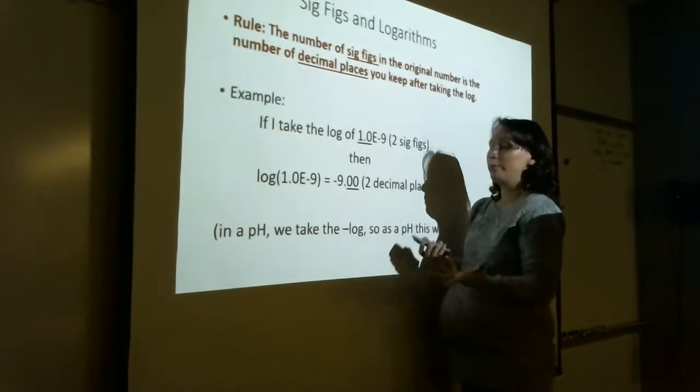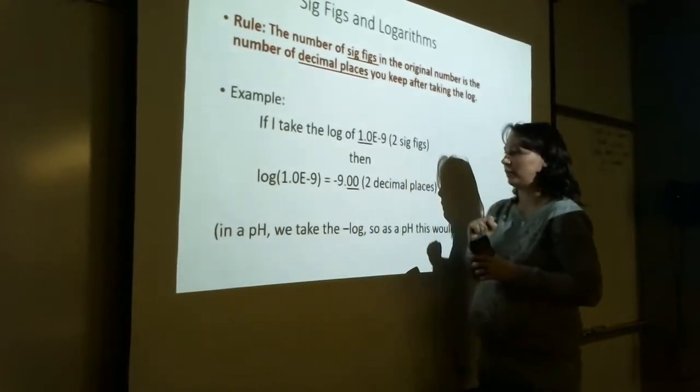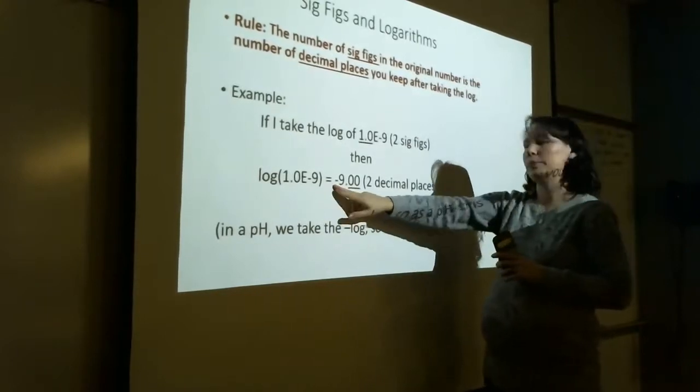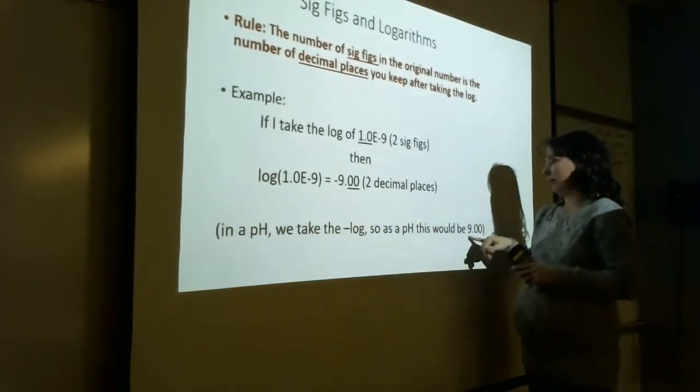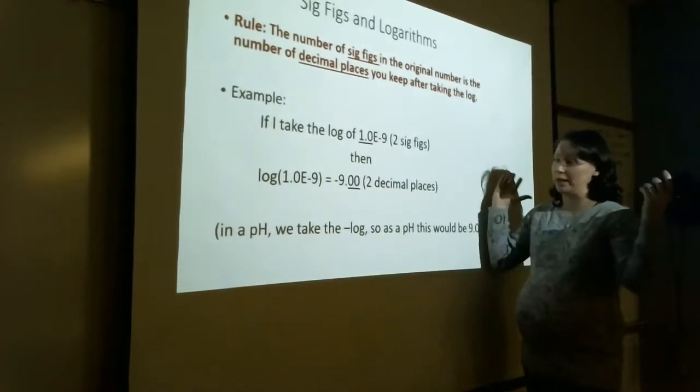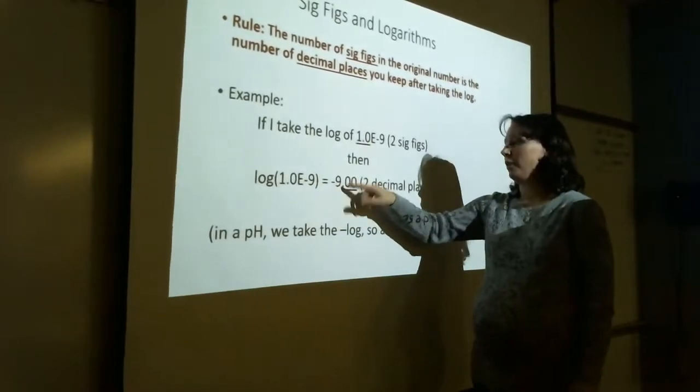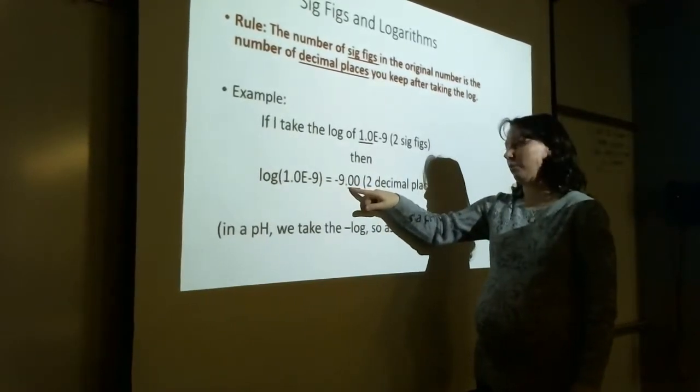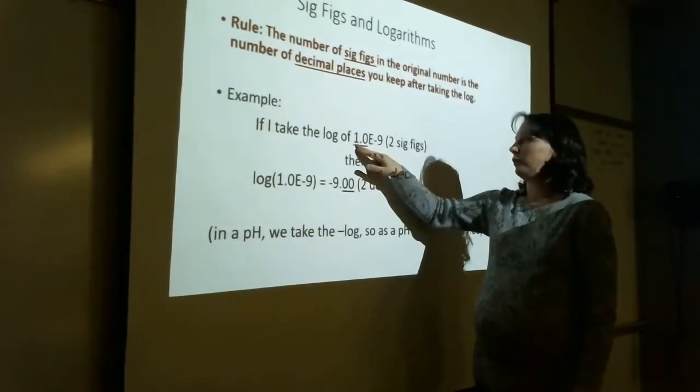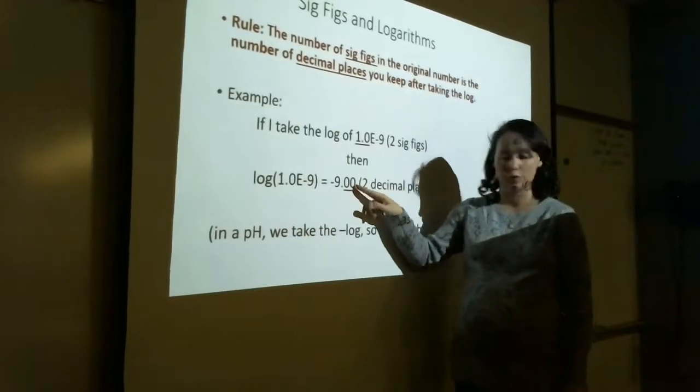If this were a pH calculation, which is probably the context that you are taking a log, pHs are always the negative log, so this would be a pH of 9.00. But if you were taking the log just for taking the log's sake, it would come out to be negative 9, but you would need to write that as 9.00. Number of total sig figs here is number of decimal places you keep after you take a log.